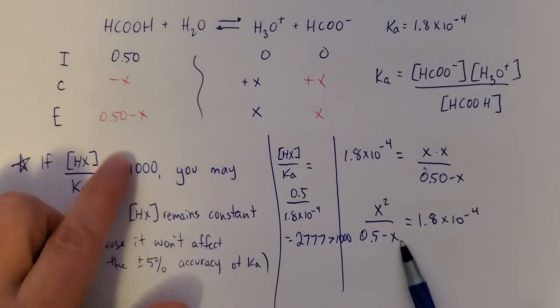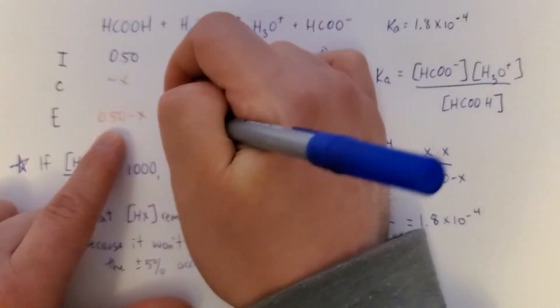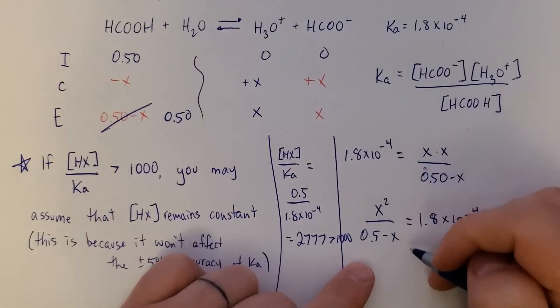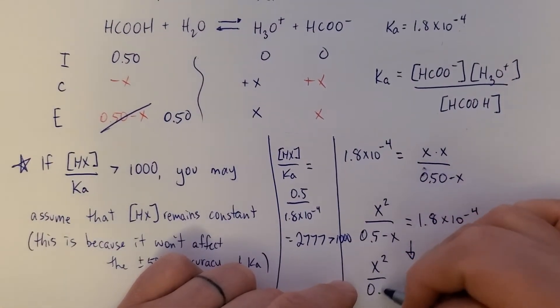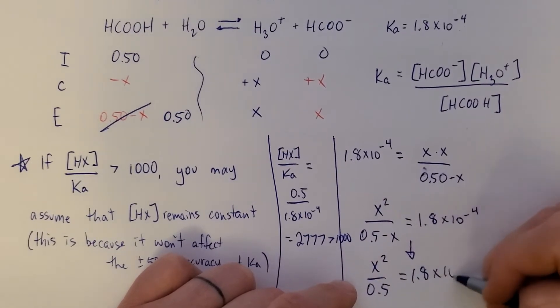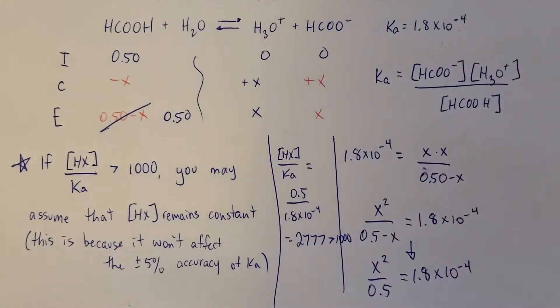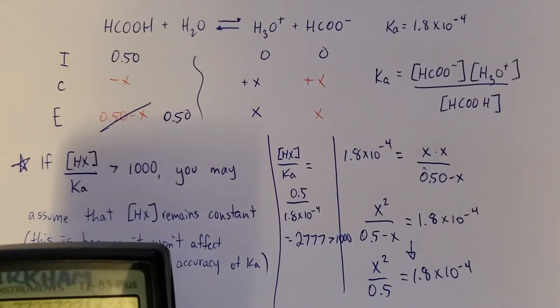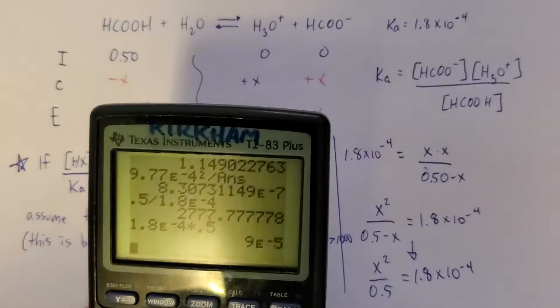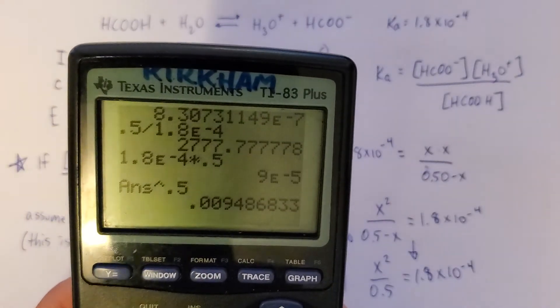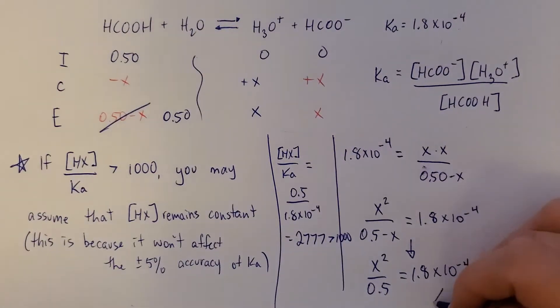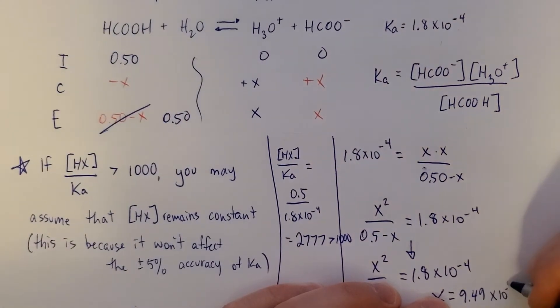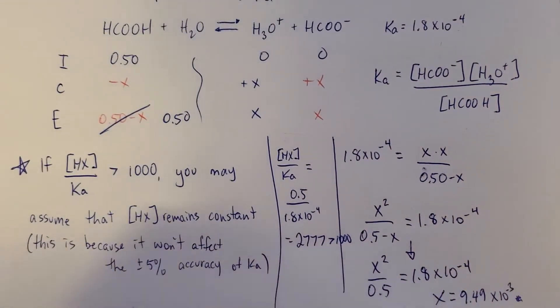You can say that the weak acid concentration remains constant. And this just becomes x squared over 0.5 equals 1.8 times 10 to the negative 4. And that's way easier to solve. We get 0.0095. I'll do scientific here. 9.49 times 10 to the negative 3. Okay, that's what x is.